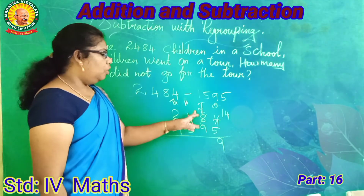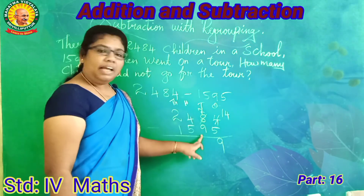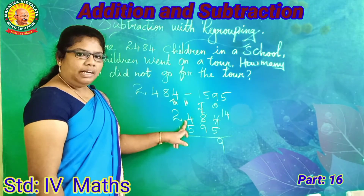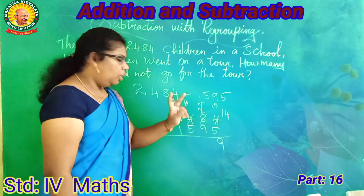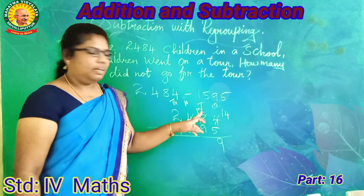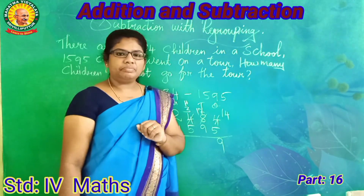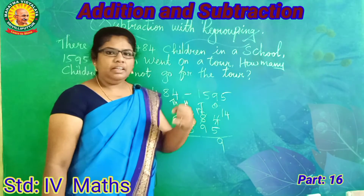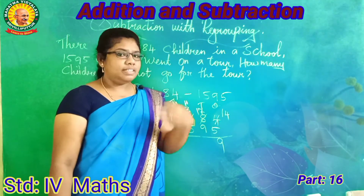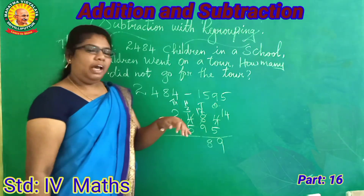Look at the tens. We had 8 tens but borrowed 1, so 7 tens. 7 tens minus 9 tens — smaller value, so we borrow from hundreds. Counting up from 9 to 17 — we get 8 in the tens place.